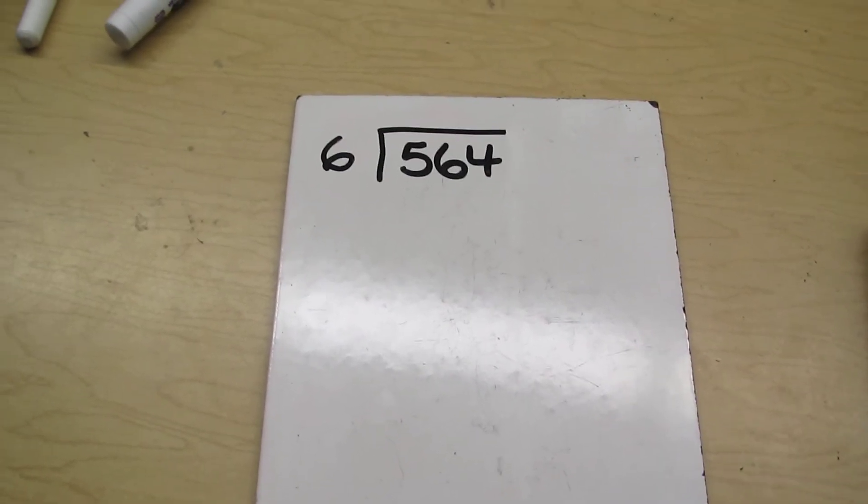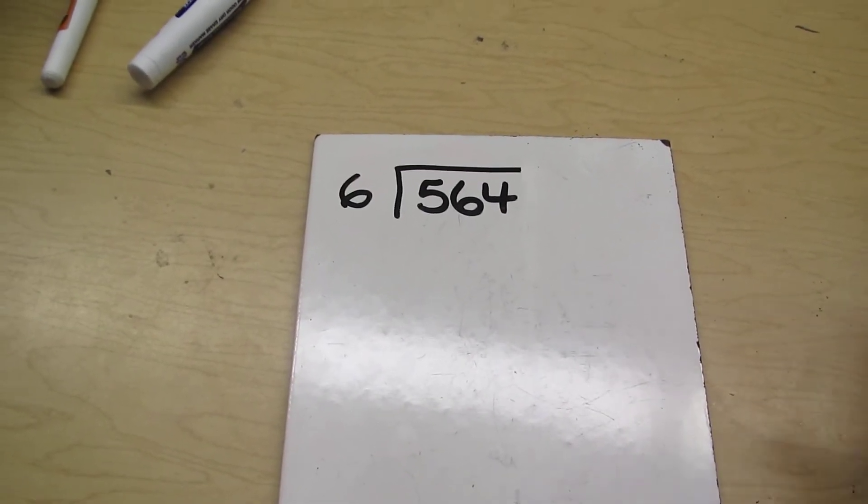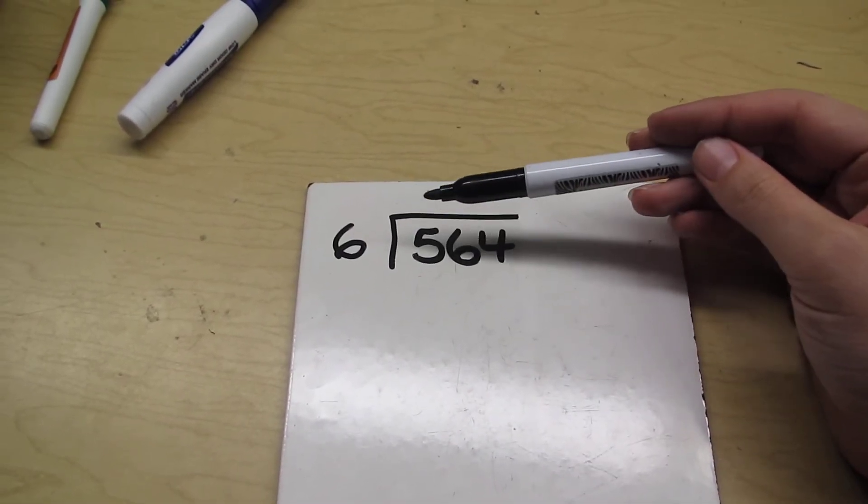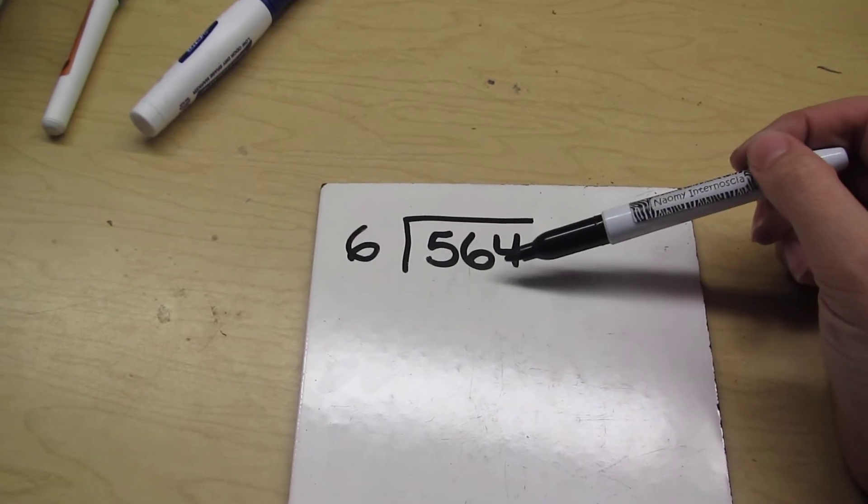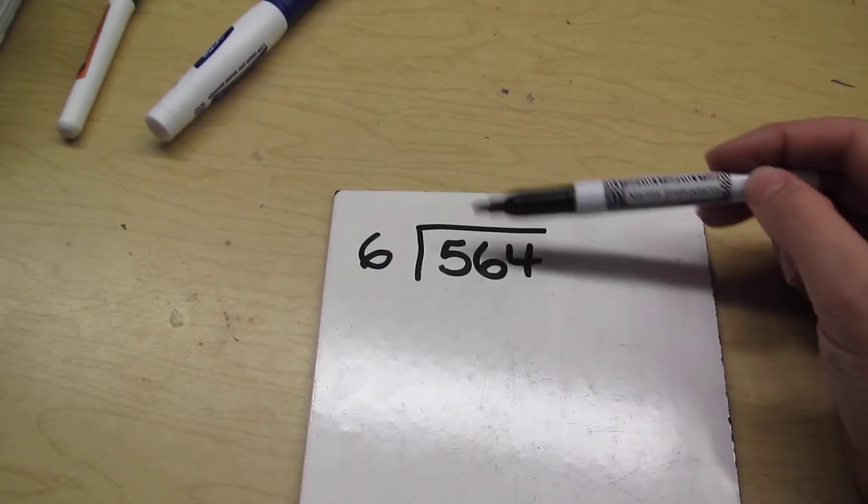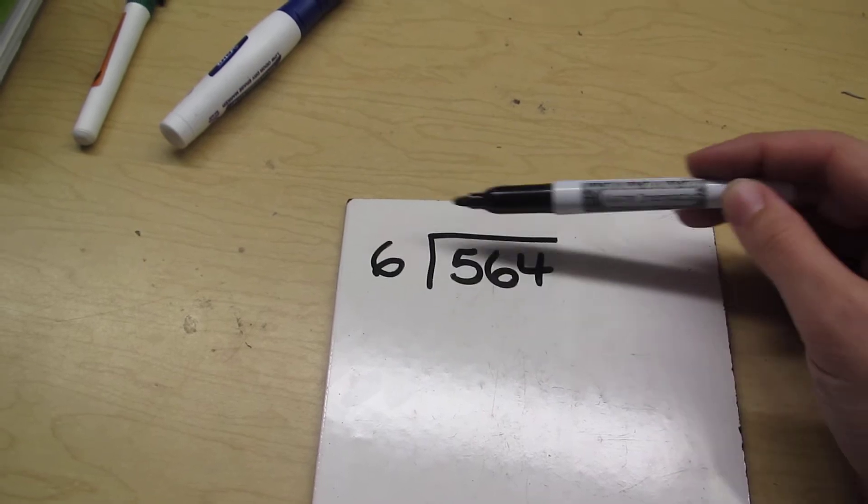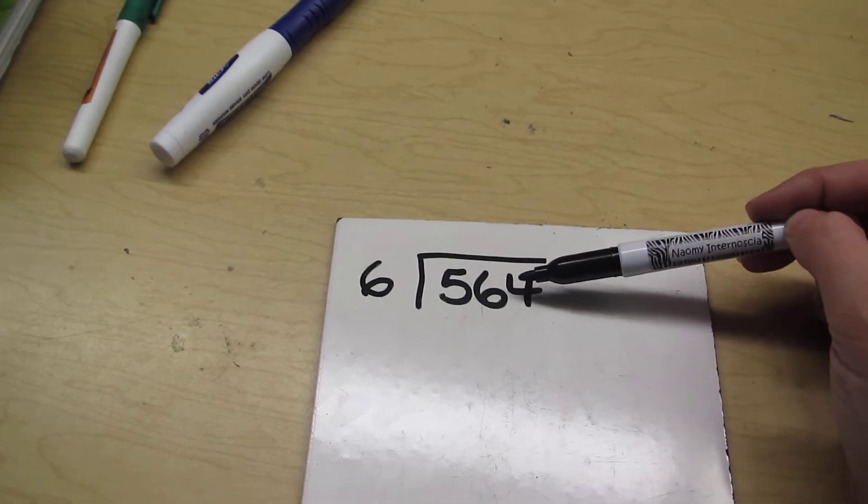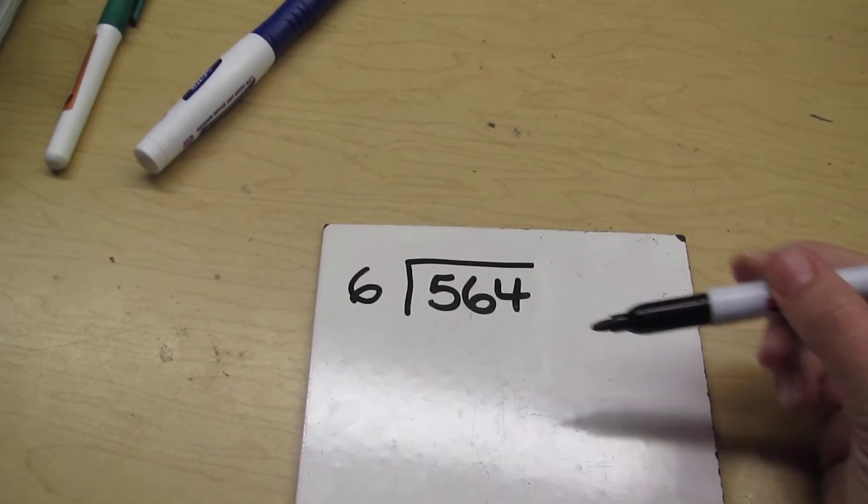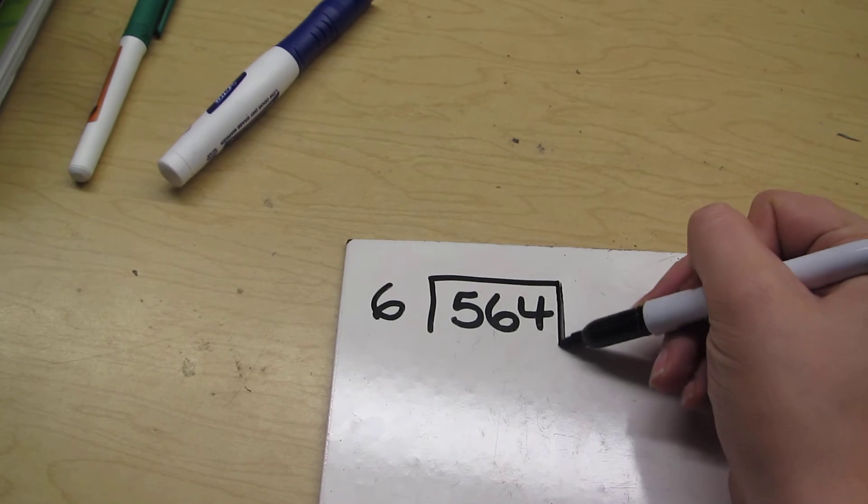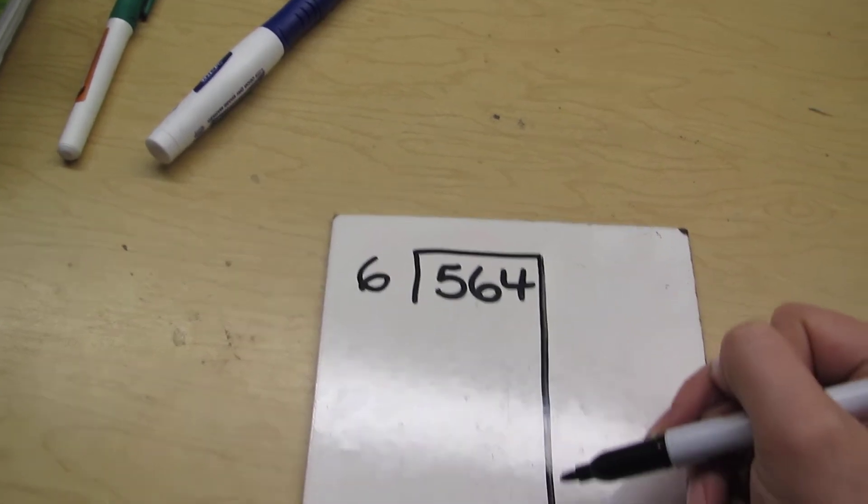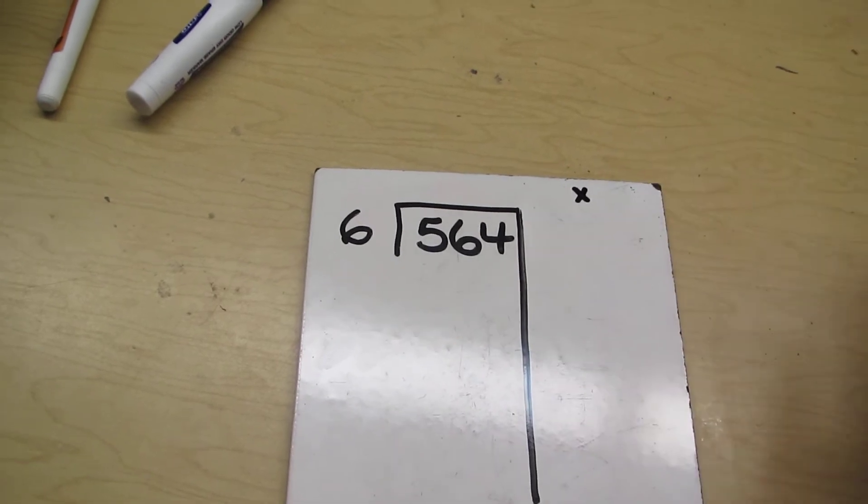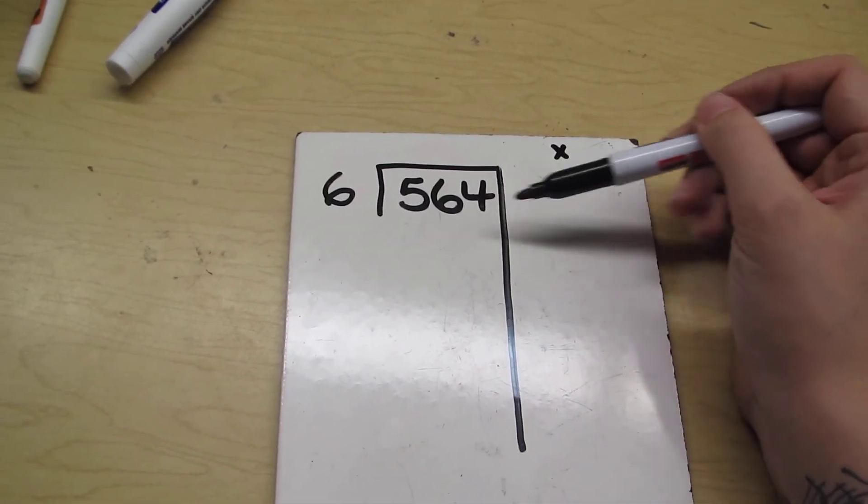Alright, here is another example with long division using three-digit numbers. Today we're going to do 564 divided by 6. Make sure you're reading it properly - don't say 6 divided by 564. This is the number we're working with, so it's 564 divided by 6. First thing we're going to do is make a nice straight line to have some space to work. Remember that over here is where the multiplication is happening.